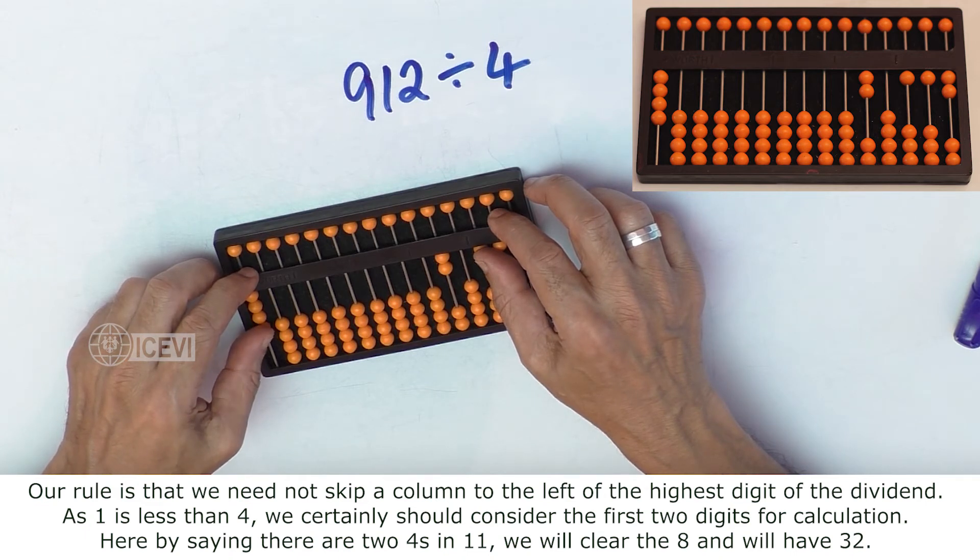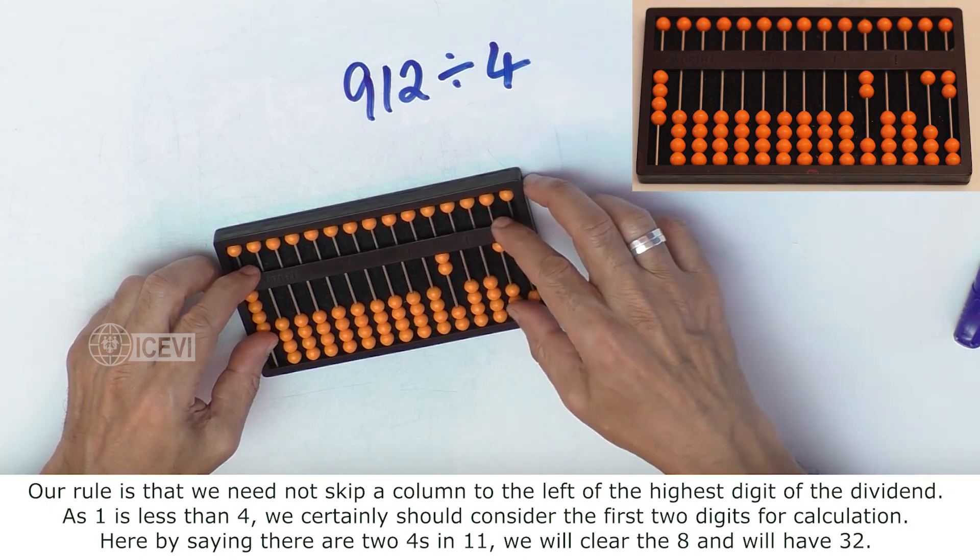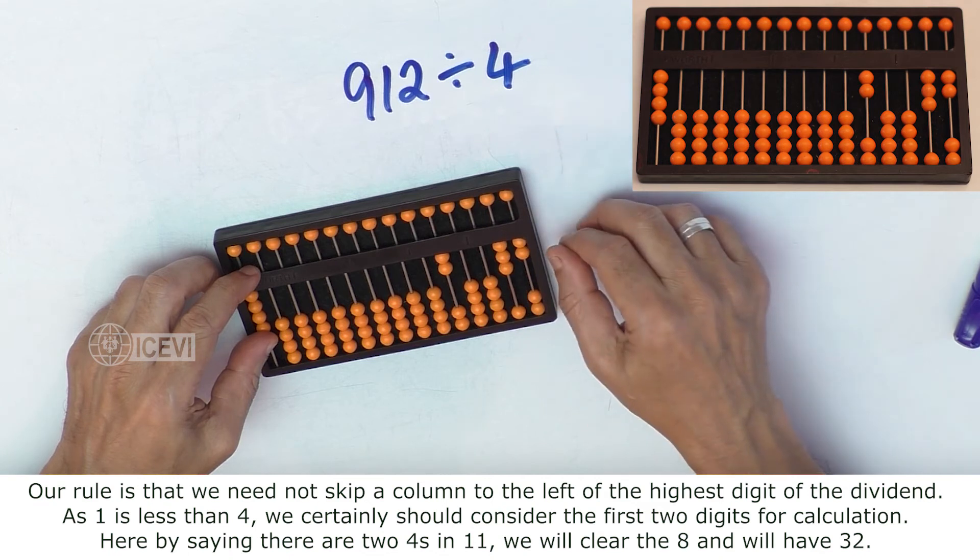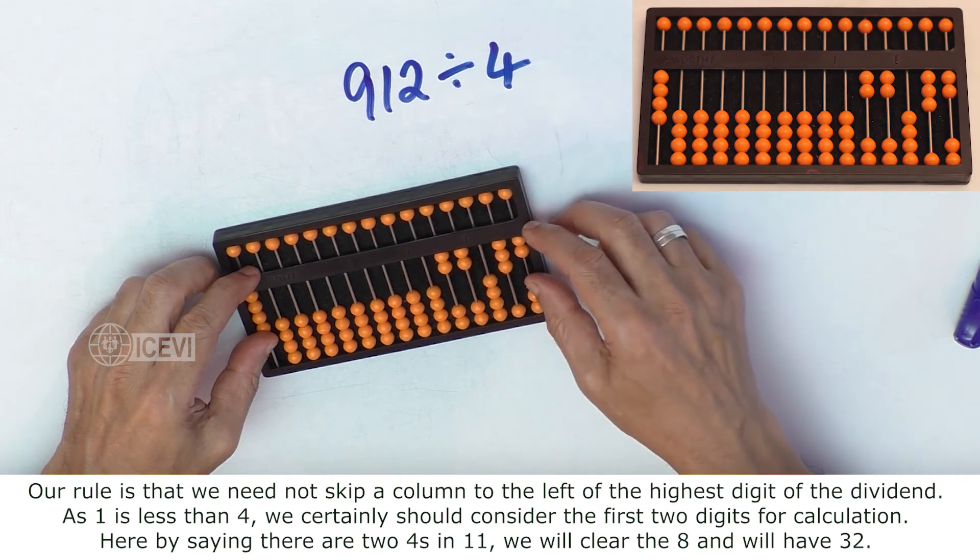So here by saying there are 2 fours in 11, we will clear 8 that will give us 32. And for that we are setting 2 in the quotient area.